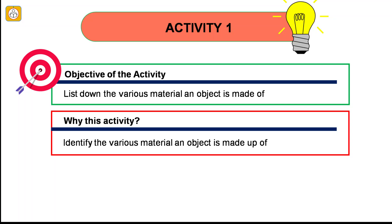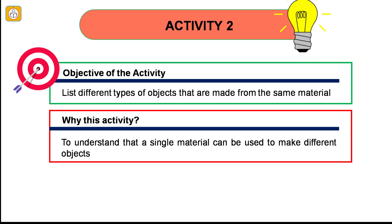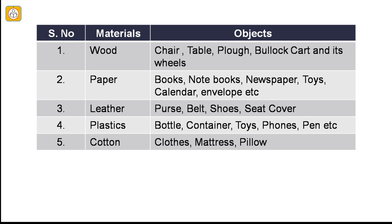Activity number 1: The objective of the activity is to list down the various material an object is made of. I have listed seven objects. The most common material used in making these materials are steel, glass, plastic, metal, wood, rubber and clay. Activity number 2: The objective of the activity is to list down different types of objects that are made from the same material. Why this activity? This activity is to be done to understand that a single material can be used to make different objects. The table shows five of the most common material used and the various objects made by using these materials.